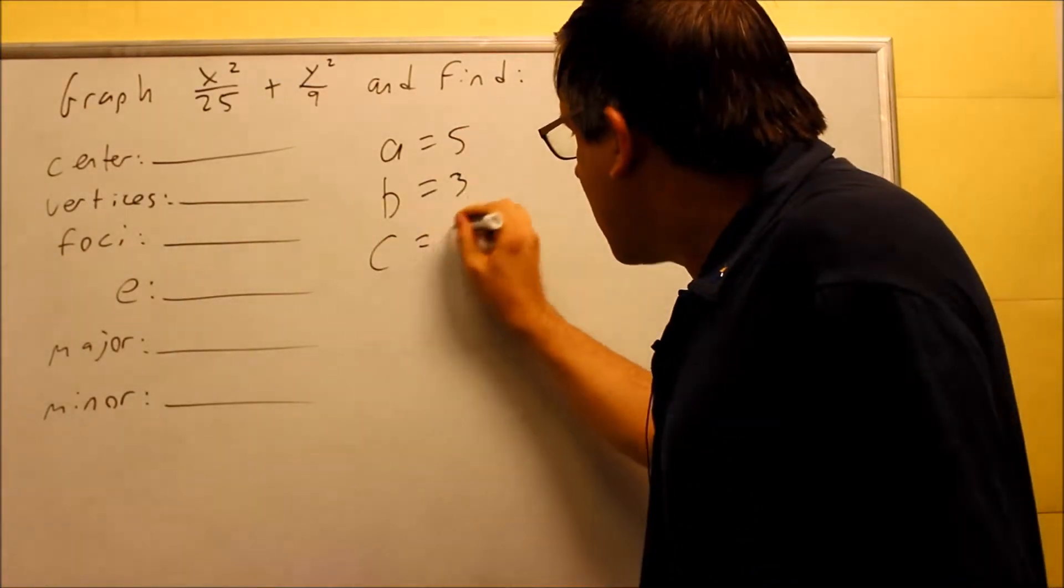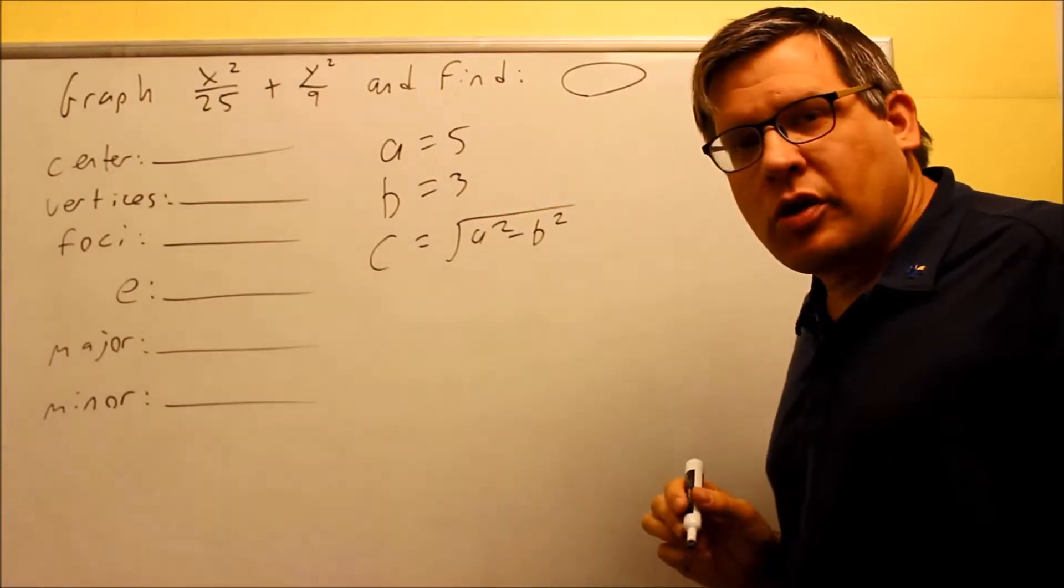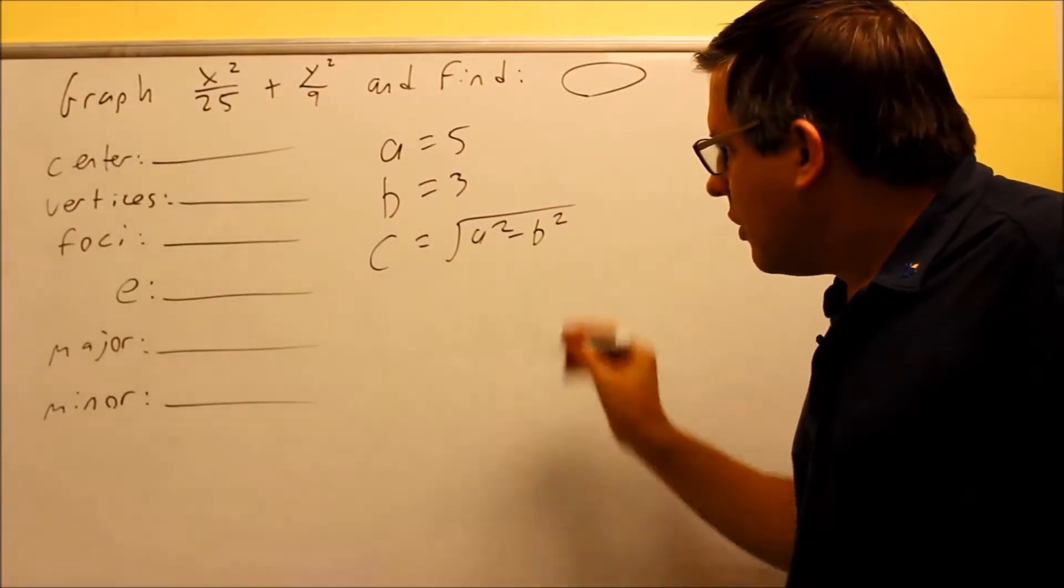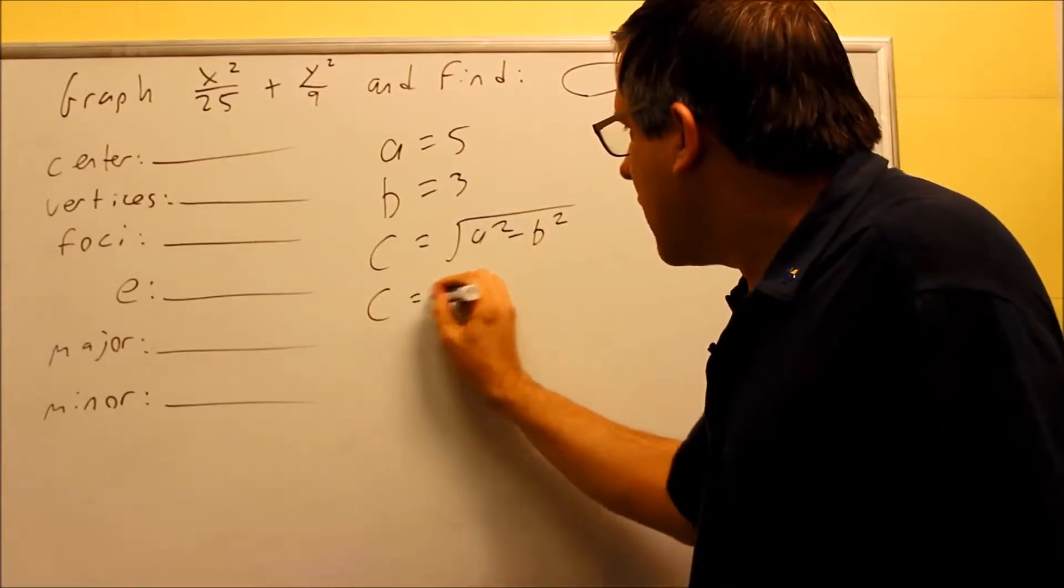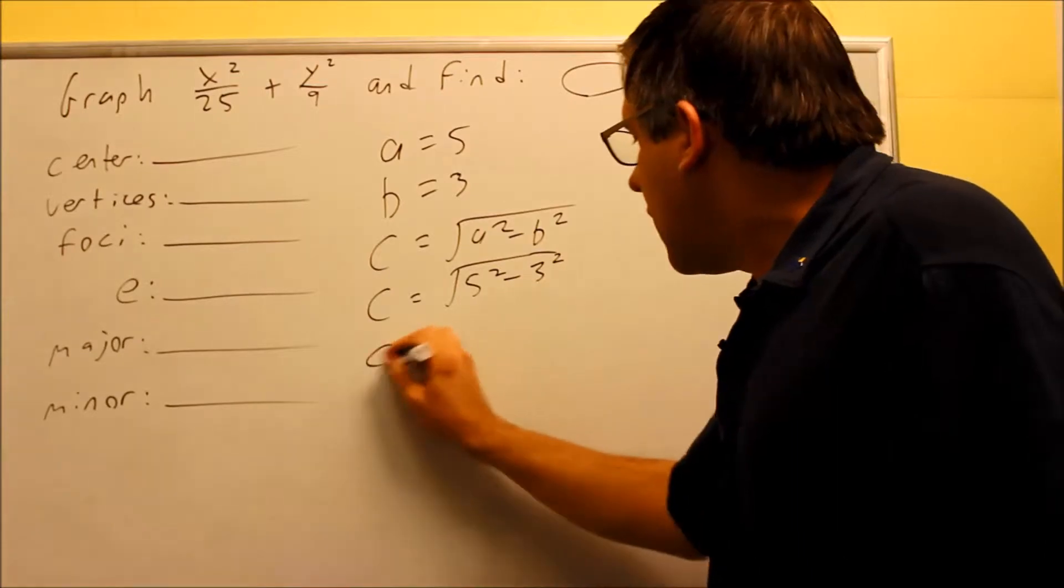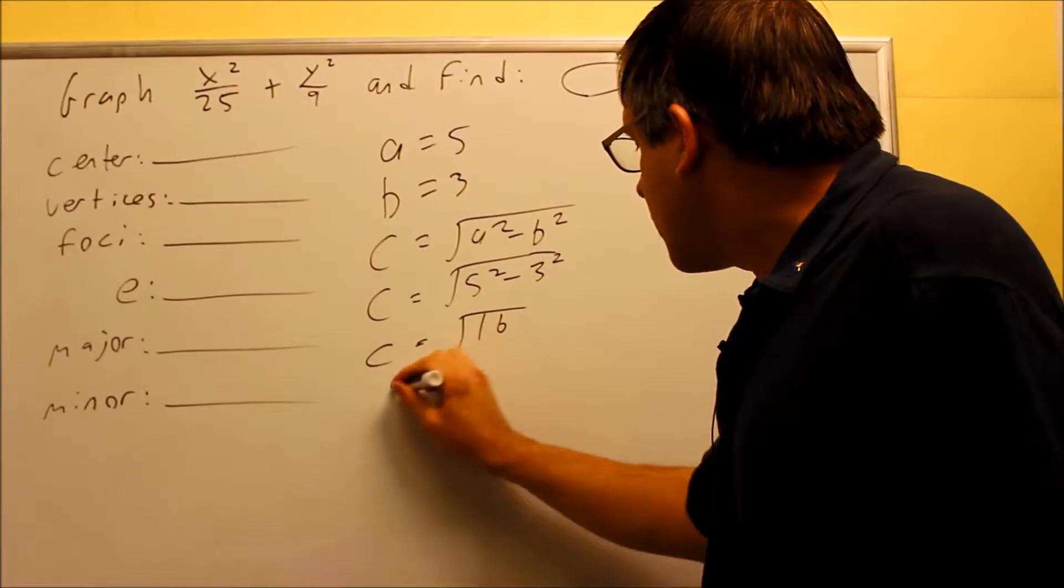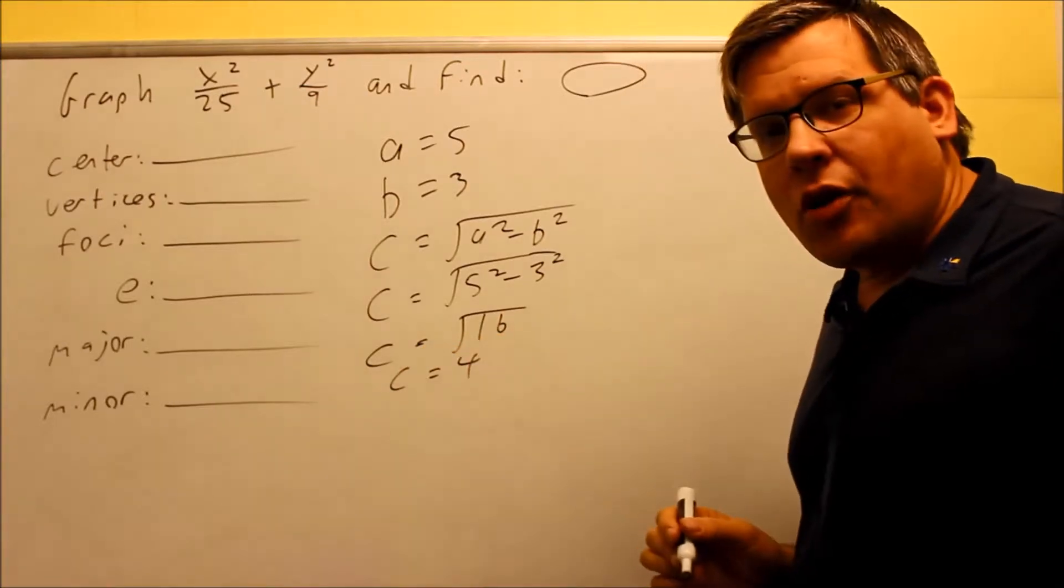The formula for c that's given in the notes is this one. c is equal to the square root of a squared minus b squared. So we're going to do that with the information that's given here. We're going to do the square root of 5 squared minus 3 squared. And for that, we get 25 minus 9, which is 16. So c is equal to 4.